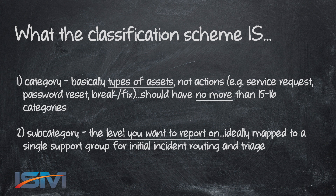The incident classification scheme is a category and a subcategory, and at times we've had clients who, for reporting needs, go down to what we call a sub-subcategory. Typically, industry standard is a two-level classification scheme of category and subcategory, but we have had instances where for business reasons we take it to a third level. Categories represent the types of assets you manage within your IT organization — enterprise infrastructure, enterprise software, desktop software, mobile devices. No matter how large your enterprise is, you should have no more than 15 or 16 categories.